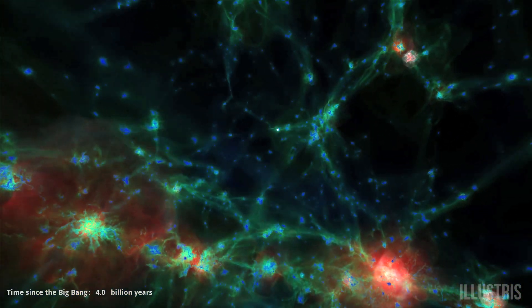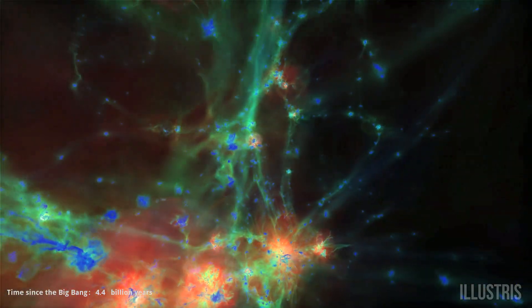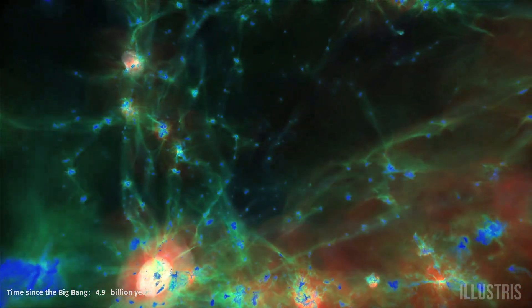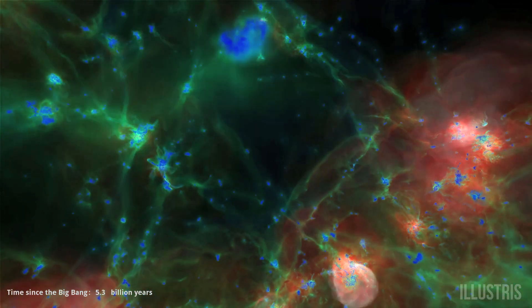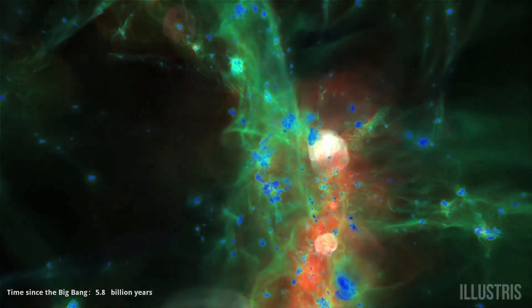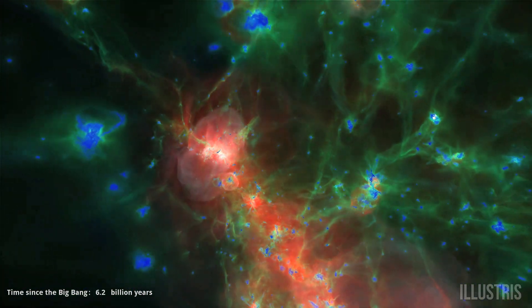In time, these hot bubbles push out well beyond the central galaxies. This has the effect of limiting the amount of gas that can fall into central regions, allowing smaller galaxies to form on the periphery.